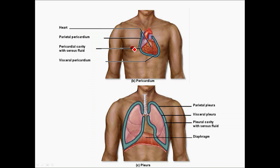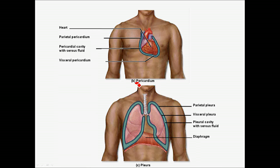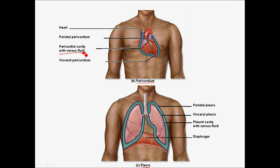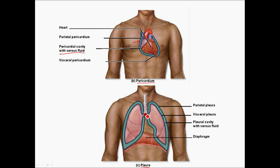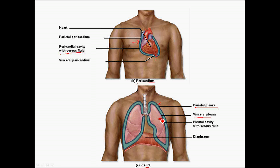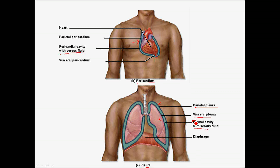As you can see from this slide, we are looking at the pericardium and the pleura. Let's focus on the pericardium: the parietal pericardium is against the thoracic wall, whereas the visceral pericardium is against the heart itself — it lines the heart. The space in between is the pericardial cavity with serous fluid. The same can be said for the pleural cavity and pleural membrane. You have the parietal pleura against the thoracic wall, the visceral pleura on the surface of the organ itself, and the pleural cavity filled with serous fluid that helps reduce friction.